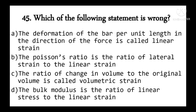Among the statements, the following are correct: deformation per unit length in the direction of force is linear strain; Poisson's ratio is lateral strain to linear strain; ratio of change in volume to original volume is volumetric strain. The wrong statement is that bulk modulus is the ratio of linear stress to linear strain — it should be volumetric strain, not linear strain.